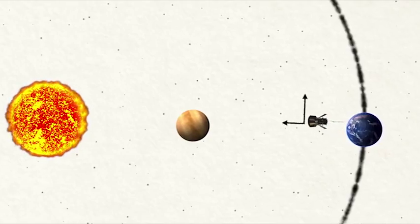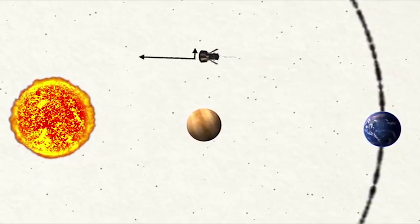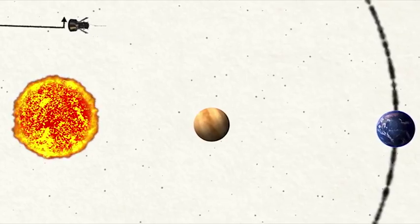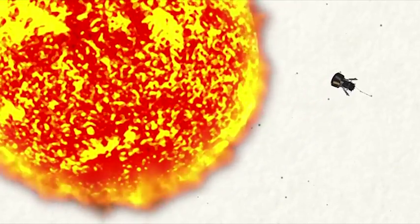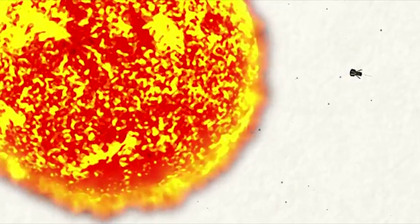When it finally does make its closest approach to the Sun, Parker Solar Probe will have lost much of its sideways speed, but gained a great deal of overall speed thanks to the Sun's gravity. Parker Solar Probe will hurtle past the Sun at 430,000 miles an hour, the very first human-made object to get that close.